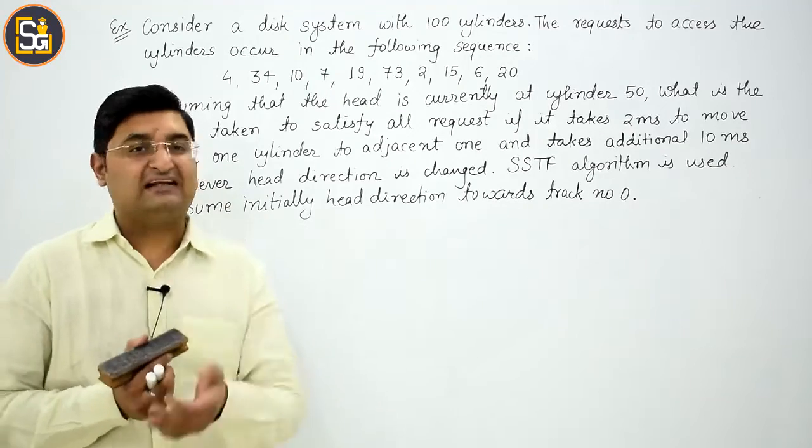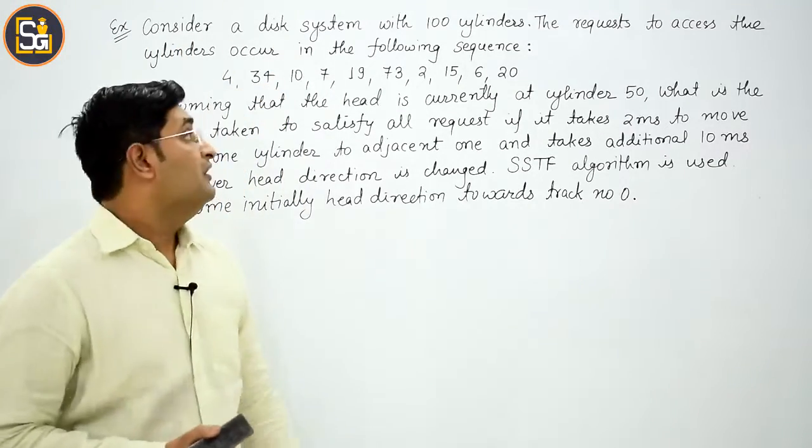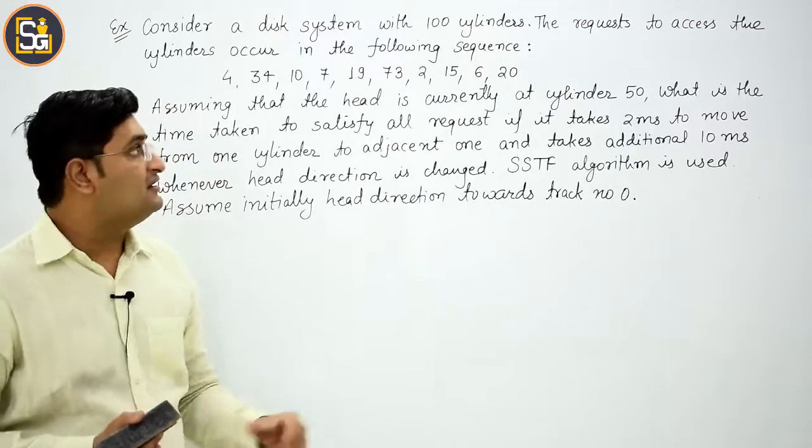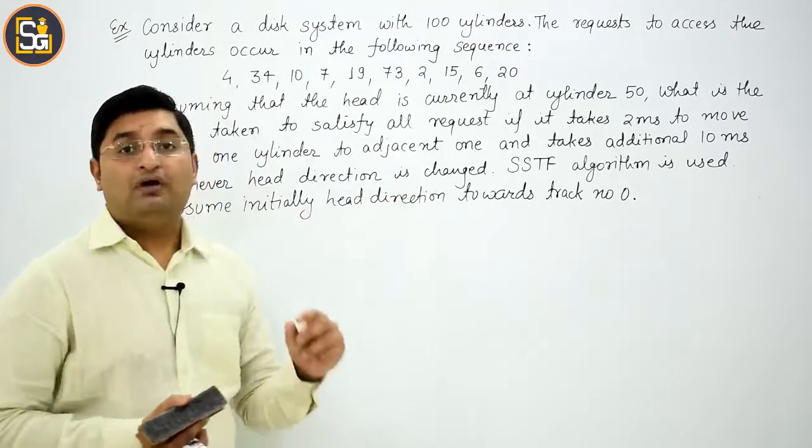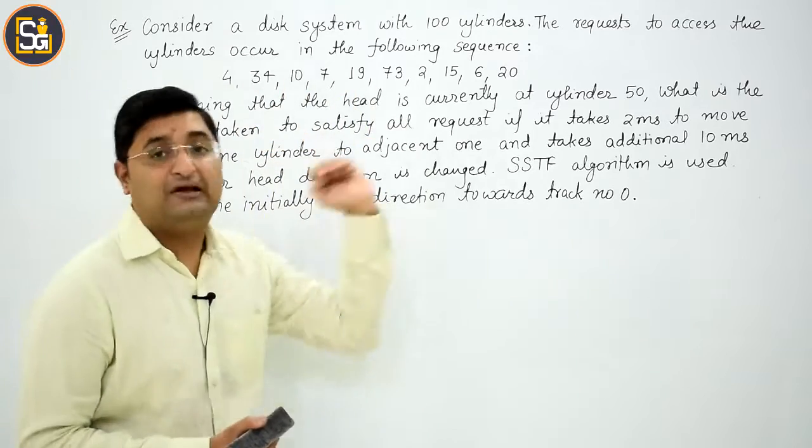Now, come to the next example. Consider a disk system with 100 cylinders. The request to access the cylinders occurs in the following sequence: